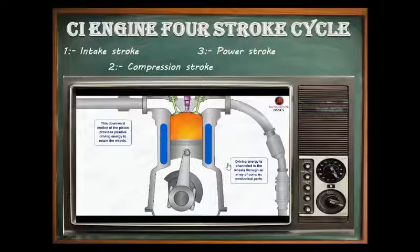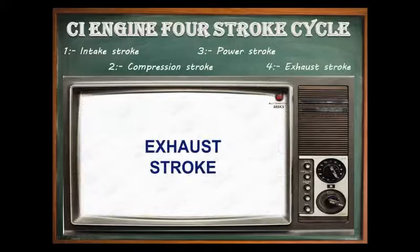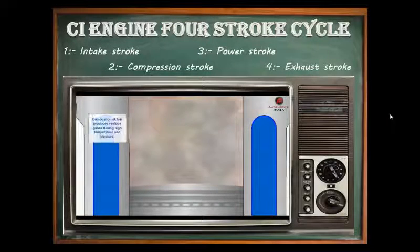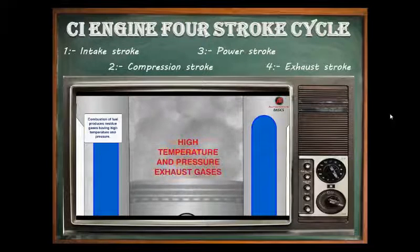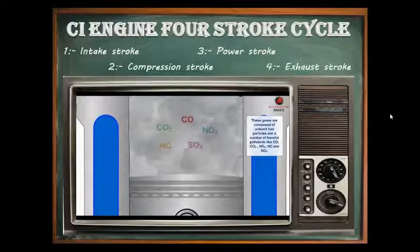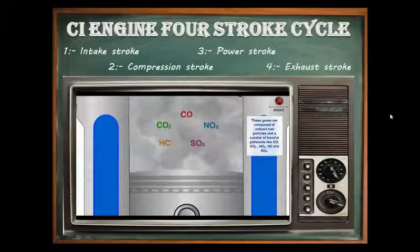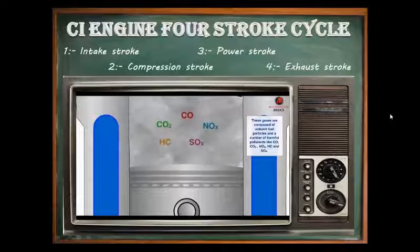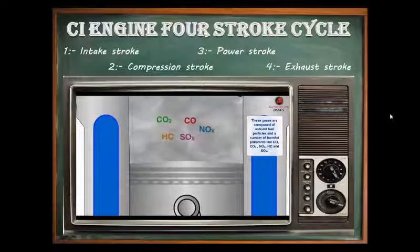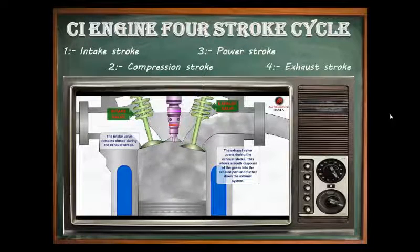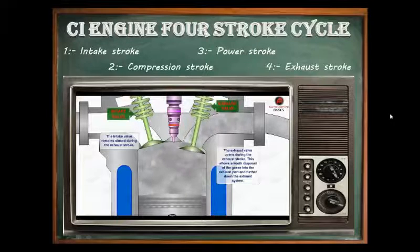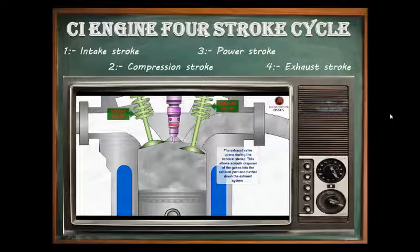The fourth stroke is the exhaust stroke. When the piston reaches the bottom end of the cylinder after the power stroke, the exhaust valve opens. At this time, burnt gases are present in the cylinder, causing the cylinder pressure to be slightly above atmospheric pressure. This pressure difference allows the burnt gases to escape through the exhaust port as the piston moves toward the top end of the cylinder. At the end of exhaust, all burnt gases escape and the exhaust valve is closed.